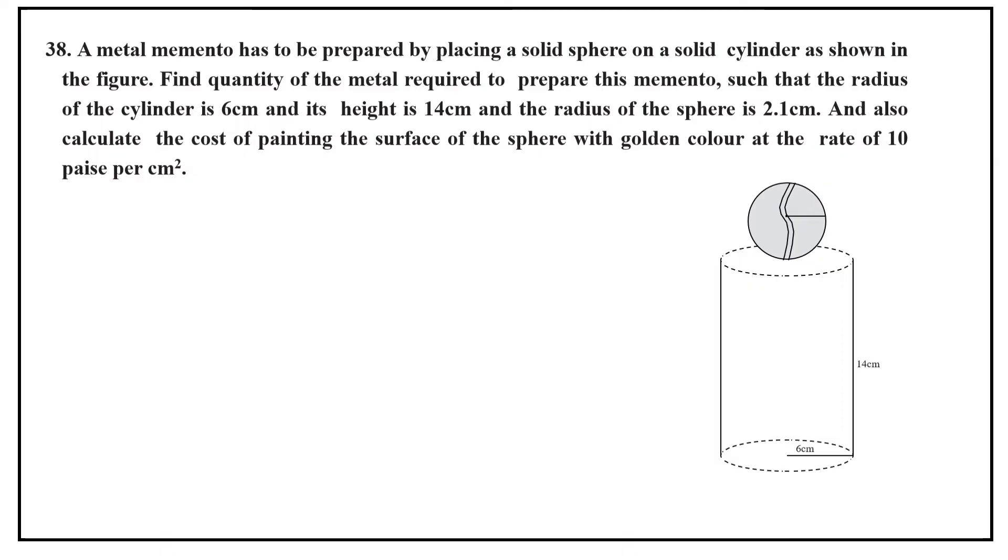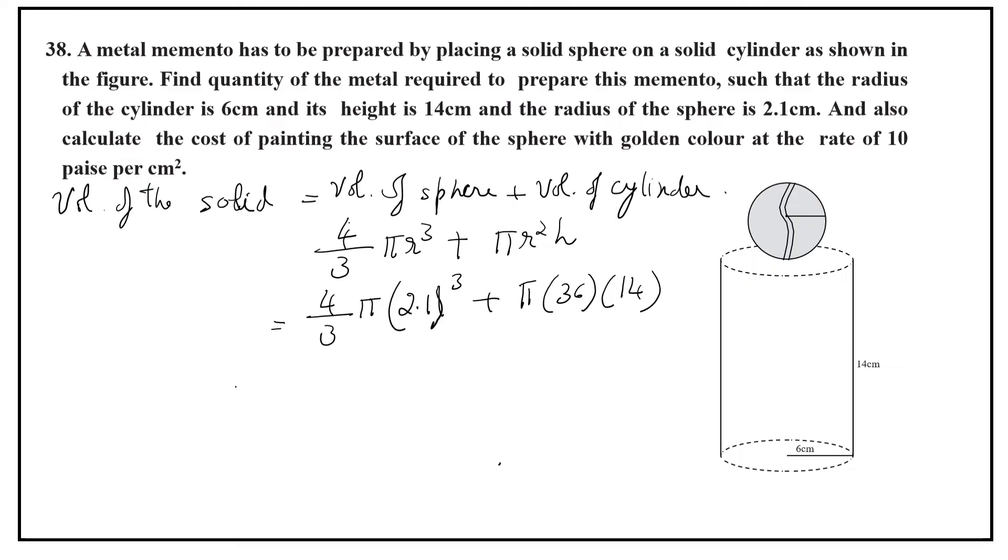Now let us calculate the volume of the solid. Volume of the solid is volume of sphere plus volume of cylinder. Volume of cylinder is pi r square h. Now let us substitute the values 4 by 3, let it be pi only. Here 2.1 cube plus pi, r is 6 centimeter, 6 into 6, 36, height is 14.